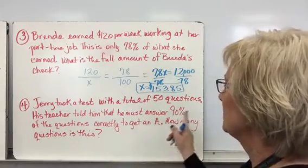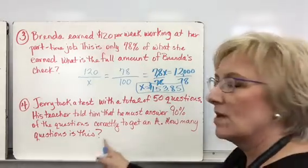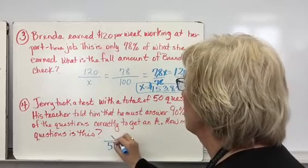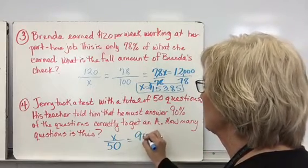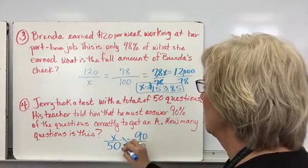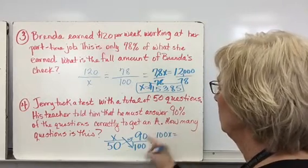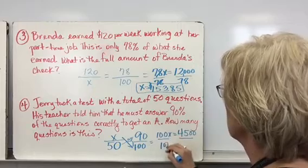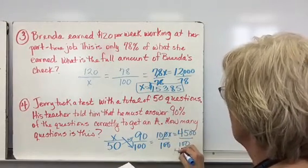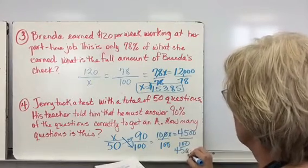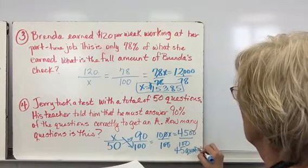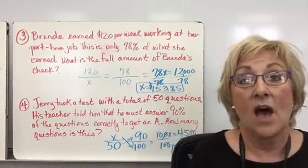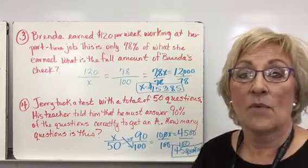Jerry took a test with a total of 50 questions. His teacher told him he must answer 90% of the questions correctly to get an A. How many questions is this? The total is 50 — that's the whole. What is the part he's got to get correct? I know he's got to earn 90%, or 90 over 100. So cross multiplying: 100X equals 4,500. Dividing both sides by 100, he's got to get 45 out of 50 questions correct in order to make a 90. Hopefully you got this and understand how to set up these problems — we're going to be doing more of these tomorrow in class.